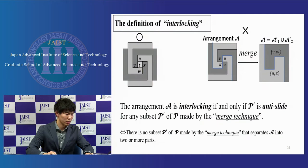This is the definition of interlocking. We define that the arrangement A is interlocking if and only if P' is anti-slide for any subset P' of P, made by the merge technique. In other words, there is no subset P' of P made by the merge technique that separates the arrangement A into two or more parts.